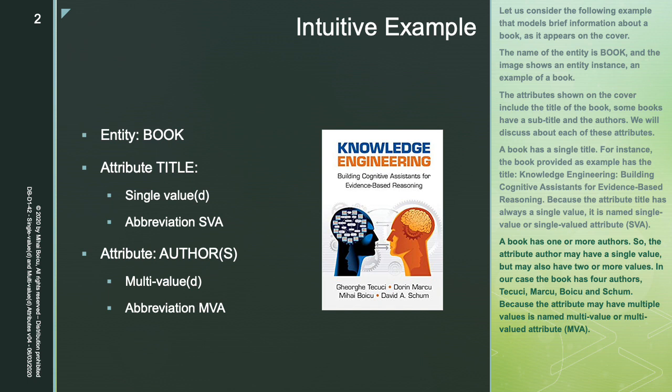A book has one or more authors, so the attribute author may have a single value but may also have two or more values. In our case, the book has four authors: Tekuc, Marko, Boiko, and Shab. Because the attribute may have multiple values, it is named a multi-value or multi-valued attribute, abbreviated MVA. In the following, we will discuss in more detail about each of these types of attributes.